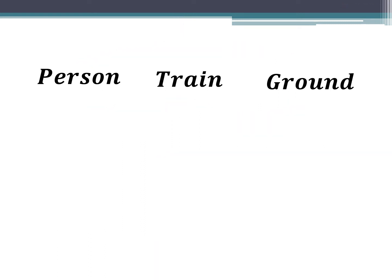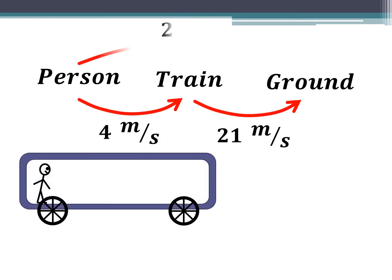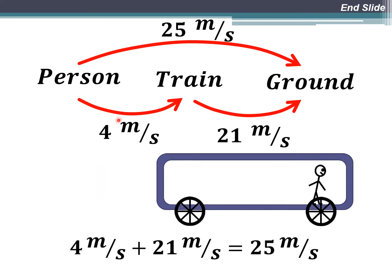In this example, the person is moving at 4 meters per second relative to the train, and the train is moving at 21 meters per second relative to the ground. When we add these two vectors together, we get a total of 25 meters per second — 4 plus 21 equals 25 meters per second.